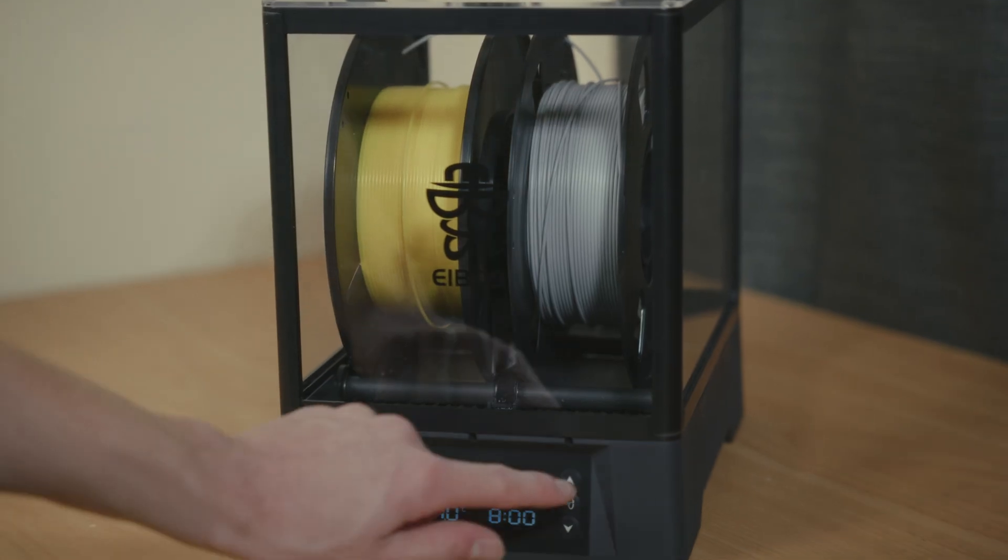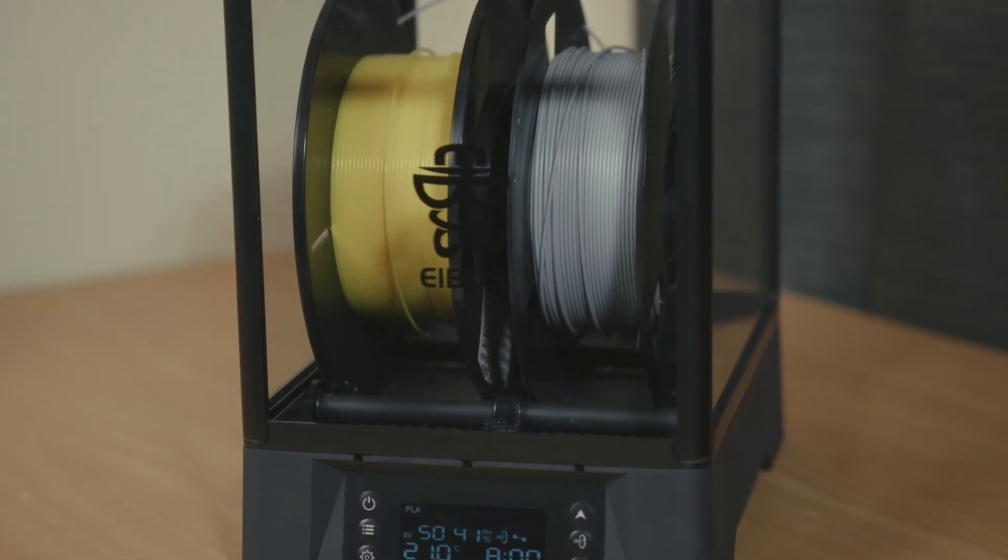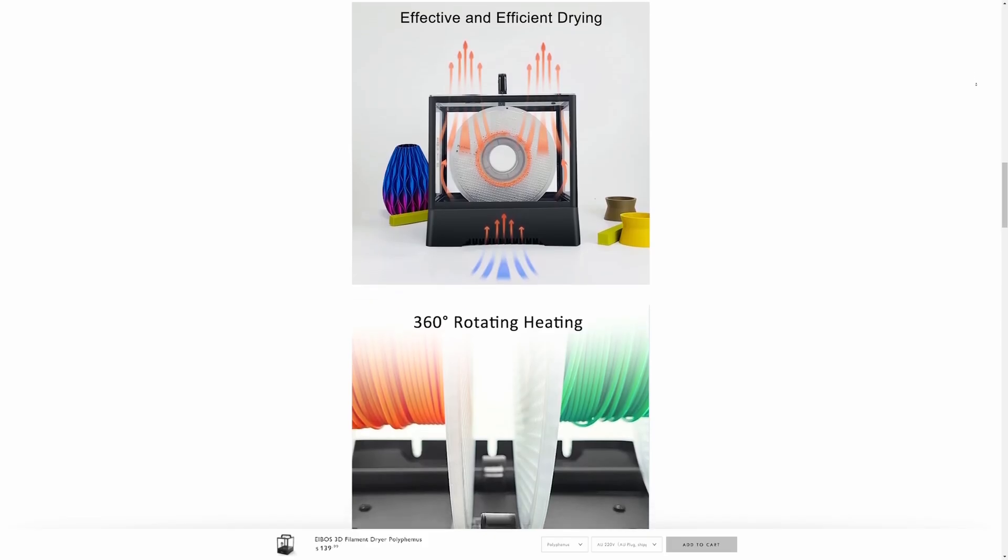So, what sets the Polyphemus apart? What's the main appeal? I think it's the ability to hold two spools at once and rotate them while drying. I don't know if any other dryers do this just yet. It's an advertised selling point.